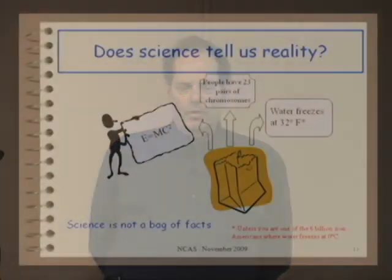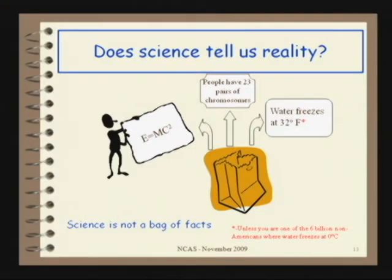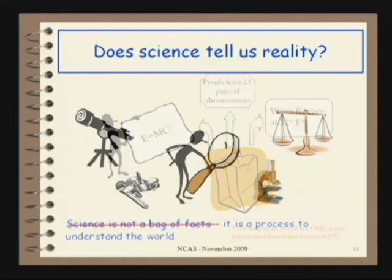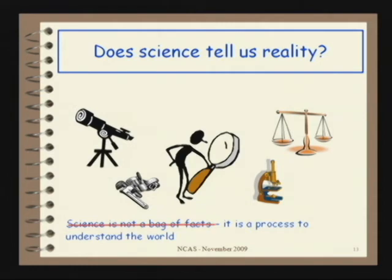Does science tell us reality? If you went through school, you learned the view most people have: science is a bag of facts — E=mc², people have 23 pairs of chromosomes, water freezes at 32 degrees Fahrenheit. But it's really not a bag of facts — it's really a process to understand the world. Science is a method of how you investigate phenomena and try to understand them.